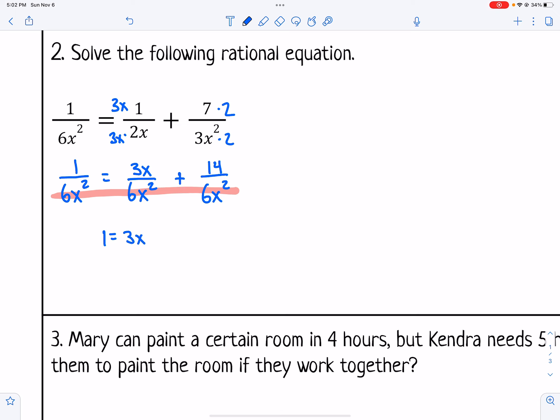So I have 1 equals 3x plus 14. Then I'm going to just subtract 14 and I get negative 13 equals 3x. And then I just need to divide by 3. So I get x equals negative 13 over 3.